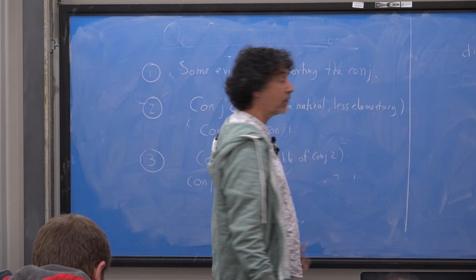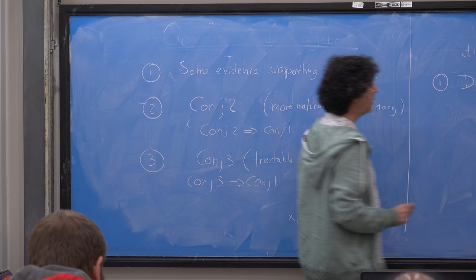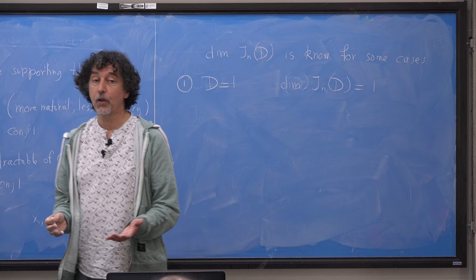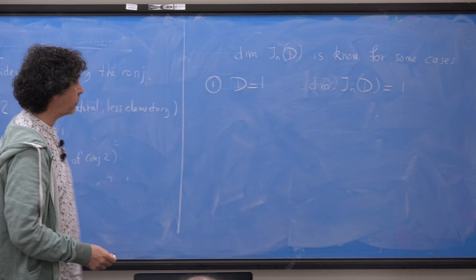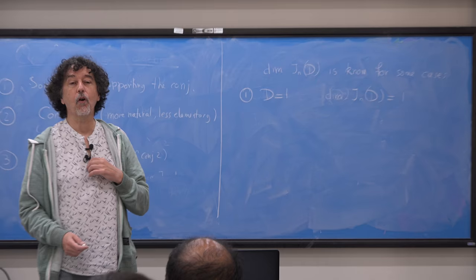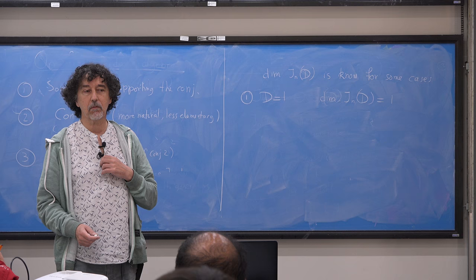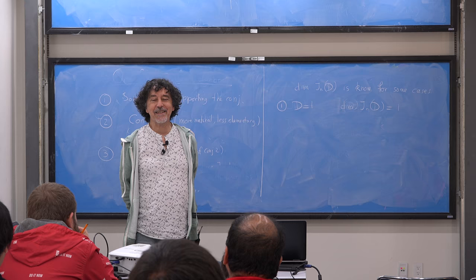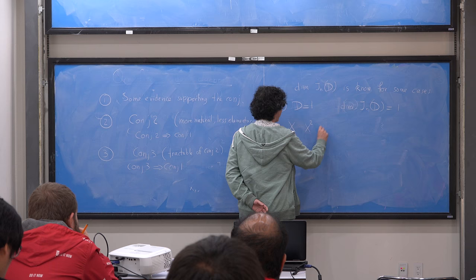The evidence for the conjecture is simple. The dimension of G_N of D is known for some cases, and I can check that in these cases it corresponds to the conjecture. The first case is D equal to 1, where it is well known that the dimension of G_N(1) is one. This is extremely elementary to show that the free Jordan algebra in one variable is essentially the polynomial algebra. In characteristic zero there is no difference between unitary and non-unitary free Jordan algebras — you get the unitary free Jordan algebra by adding a unit.